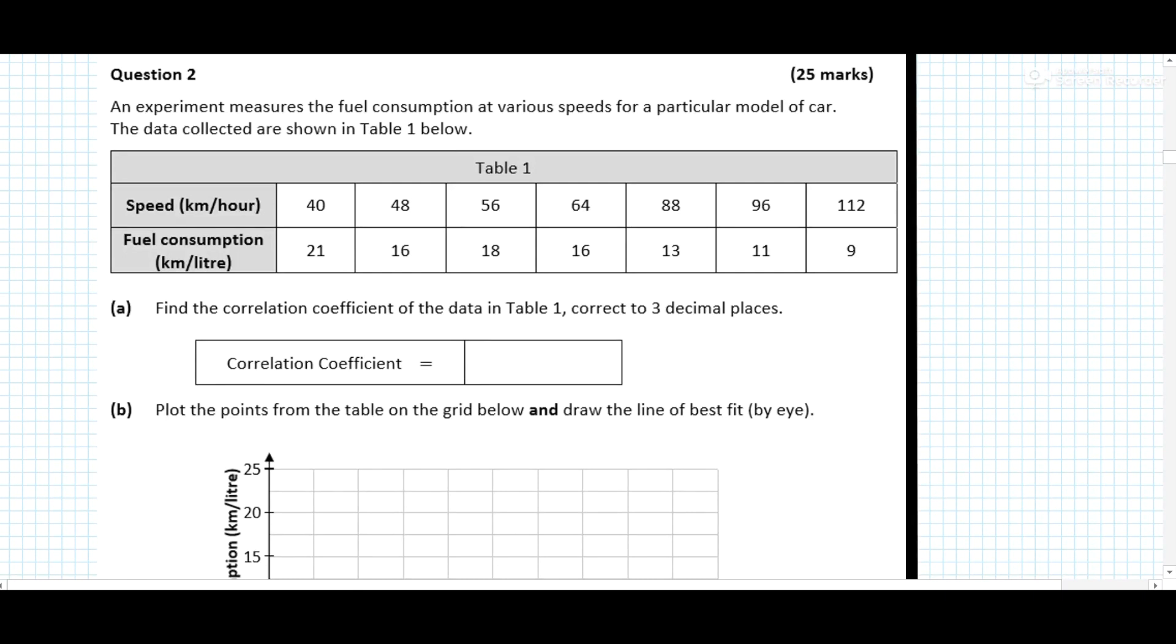Question 2 is a statistics question. Unfortunately, the very first part is going to be quite hard to explain. I'm using a Casio calculator, so I'll explain it for a Casio calculator. Find the correlation coefficient of data in table 1 correct to 3 decimal places. That's quite important.